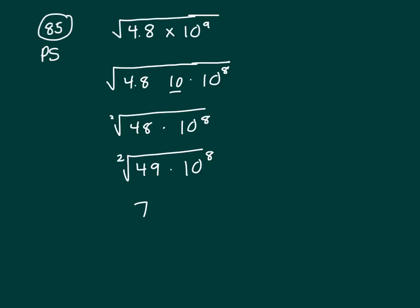And the way you simplify a base with an exponent which is underneath the radical, you take the index, in this case a square root understood to be a 2, and divide 2 into this exponent. 2 will go into 8, 4 times. So you bring out 10 to the 4th.